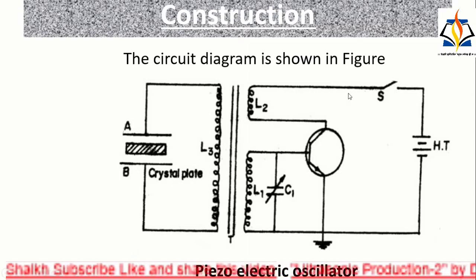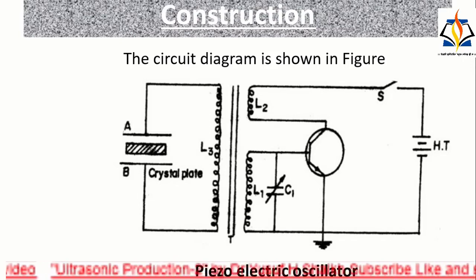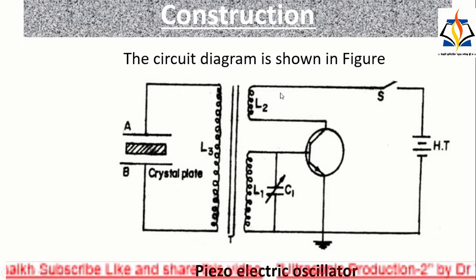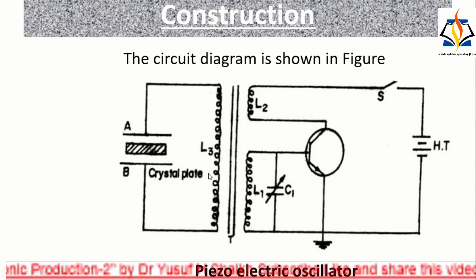The coils L1 and L2 of oscillator circuit are taken from the secondary of the transformer T. The collector coil L2 is inductively coupled to base coil L1. The coil L1 and variable capacitor C1 form the tank circuit of the oscillator.